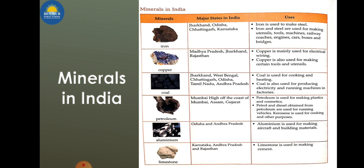Countertops in kitchens are also made up of granite. Now, minerals in India: some of the minerals found in India include iron, copper, coal, petroleum, aluminium, and limestone. The table shows the major states where they are found and their uses. Iron is found in states like Karnataka and is used for making utensils, machines, and steel.